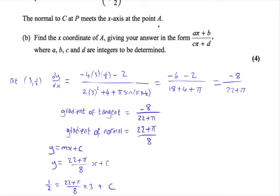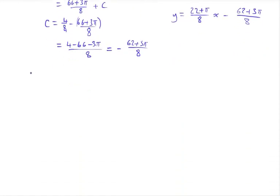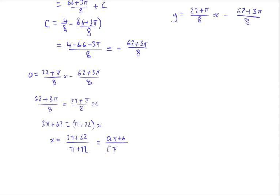The normal meets the x-axis at point A. To find the x-intercept, we set y = 0 and solve. Moving the constant term to the other side makes it positive. Multiplying both sides by 8 cancels the denominators. Finally, dividing by (π + 22) to isolate x gives: x = (3π + 62) / (π + 22). Comparing this with (aπ + b)/(cπ + d), we can see that a = 3, b = 62, c = 1, and d = 22.